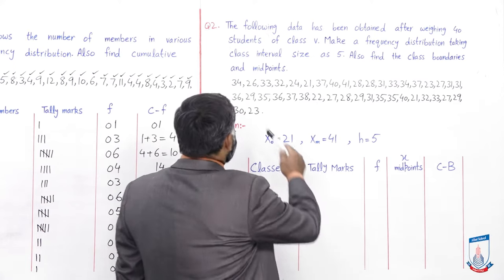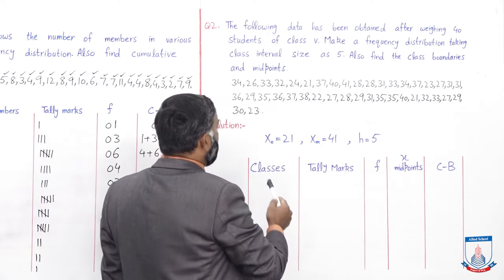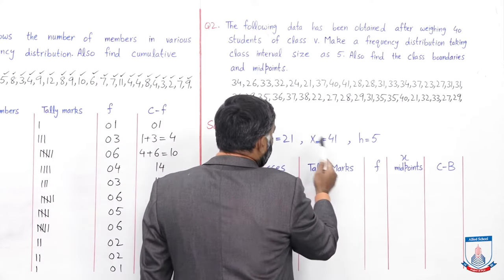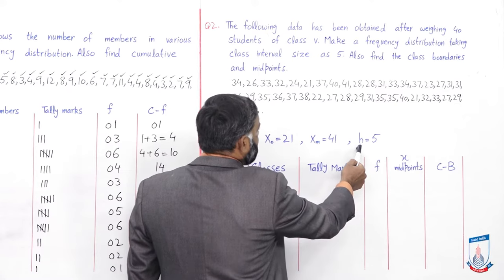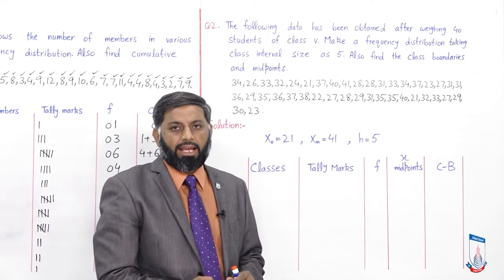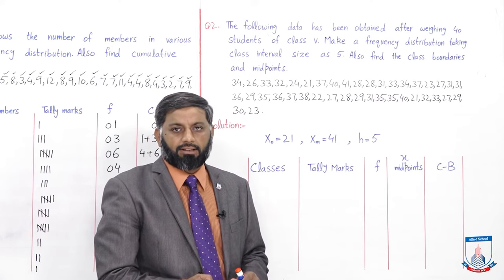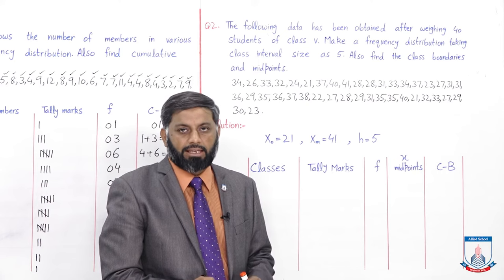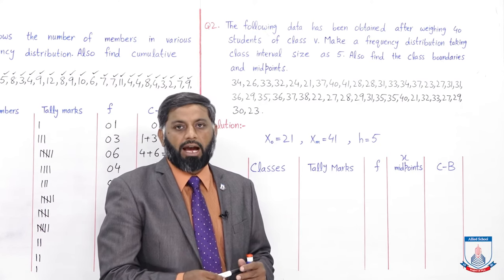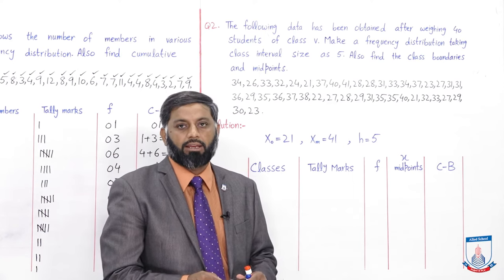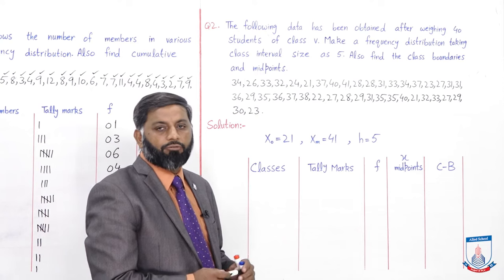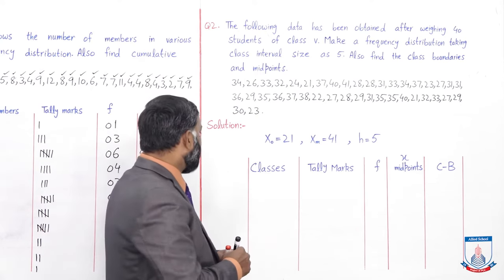Data میں minimum value x₀ = 21 ہے اور maximum value = 41 ہے۔ Class interval size h = 5 given ہے۔ Minimum value 21 ہے تو classes شروع کرنے کے لیے 21 کا nearest multiple of 5 یا multiple of 10 جو اس سے پیچھے ہو دیکھیں — آگے نہیں کیونکہ 21 پہلی class میں include ہونی چاہیے۔ 21 کا nearest ایسی value 20 ہے جو multiple of 5 بھی ہے اور multiple of 10 بھی — تو classes 20 سے start کریں گے۔